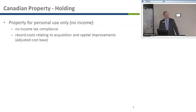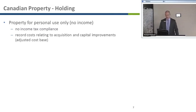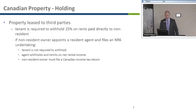Once you've acquired the property and you're holding it for your own personal use or the use of family members only, and you won't be receiving income from it, the tax compliance issues are quite simple. You won't have income tax returns to file. It is important, however, that you record all of your costs relating to the acquisition, and if you make upgrades or substantial renovations, you should keep track closely of all costs because those will add to the cost base of the property, which will lower your capital gain on a subsequent sale.